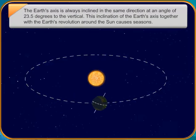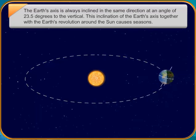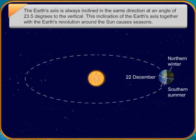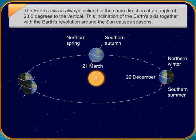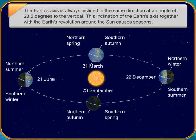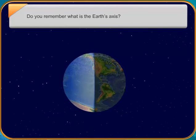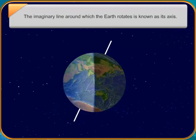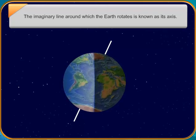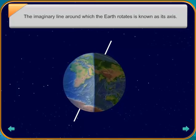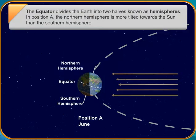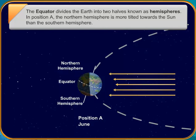Equi means equal and nox means night. Equinox is the time when all places on the Earth have equal duration of day and night. Each year, on 21st March, the spring equinox, the Sun shines directly on the equator. Again on 23rd September, the autumn equinox, the Sun shines directly on the equator. Sol means the Sun. Solstice means the standing still of the Sun. Solstice is either of the two times of the year at which the Sun reaches its highest or lowest point in the sky at midday. In the northern hemisphere, June 21st is the longest day, and December 21st is the shortest day.